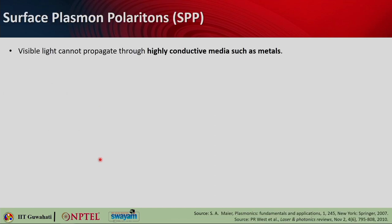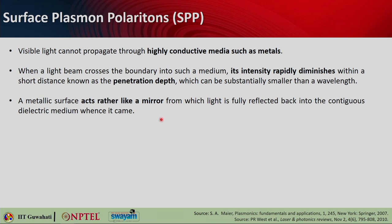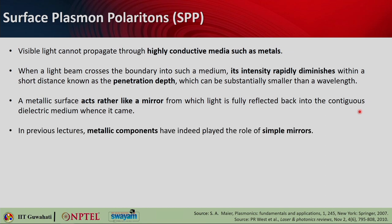Surface plasmon polaritons - what is that? Visible light as we know cannot propagate through highly conductive media such as metals. When a light beam crosses the boundary into such a medium, its intensity rapidly diminishes within a very short distance, which is called the penetration depth, and that is substantially smaller than a wavelength. A metallic surface rather acts as a mirror, from which light is fully reflected back into the dielectric medium where the light came from.